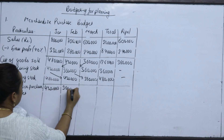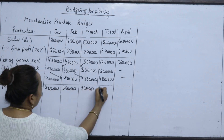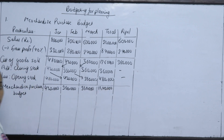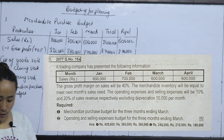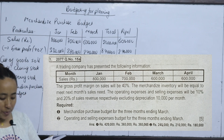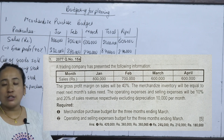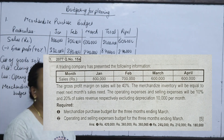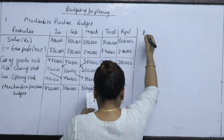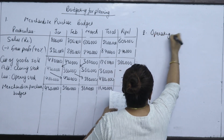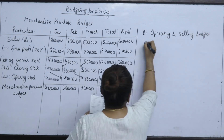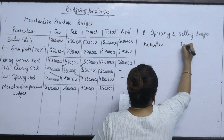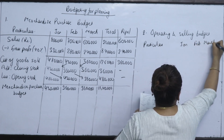The second requirement is the Operating and Selling Expenses Budget for the 3 months ending March. Operating expenses are 10% and selling expenses are 20% of sales. We set up the table with columns for January, February, and March.